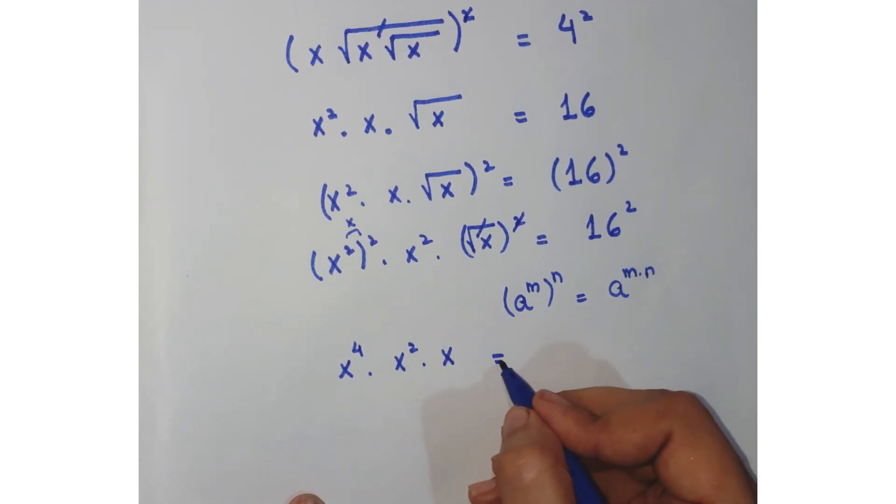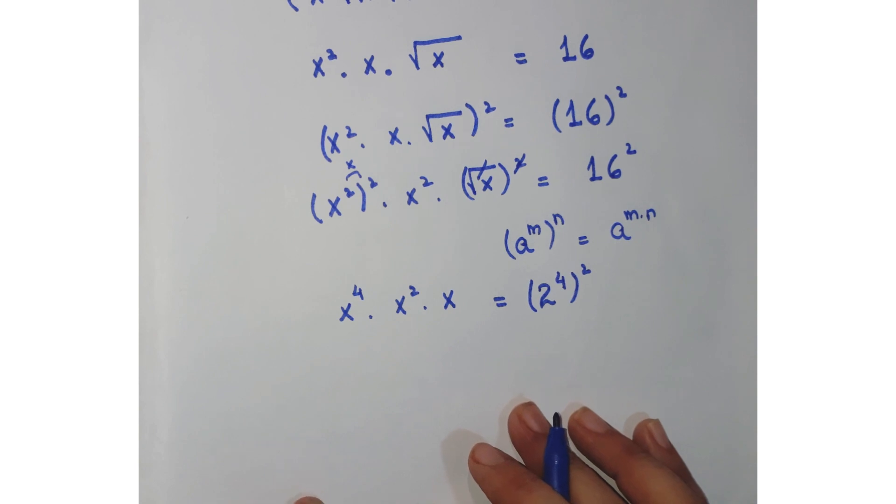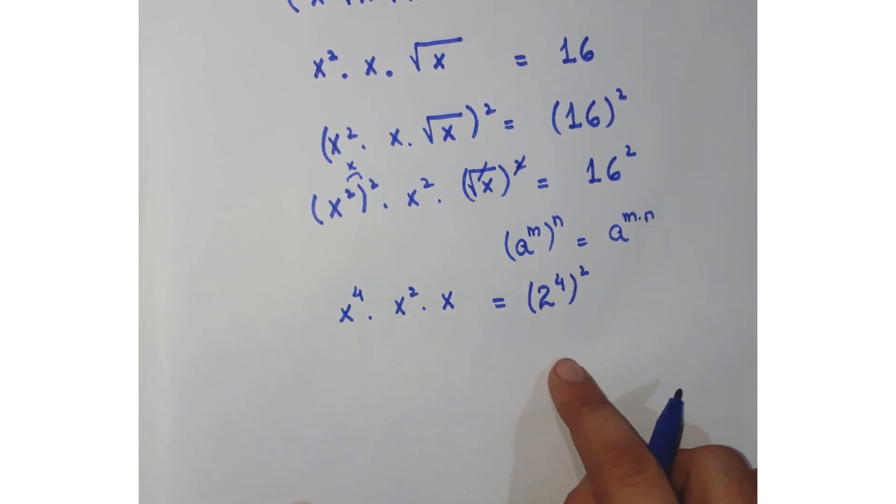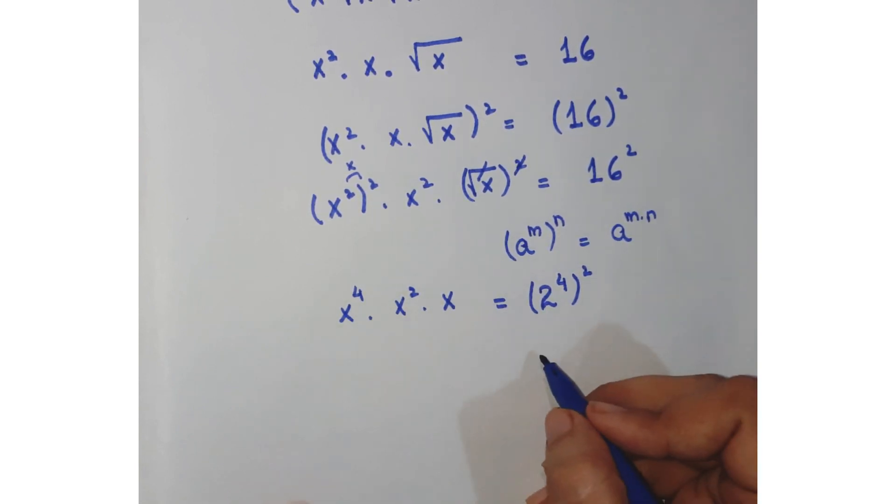Further you can simplify it as 16 can be written as 2⁴, squared. Now again applying the same rule, you can further change it in the next step. Let's simplify this first.